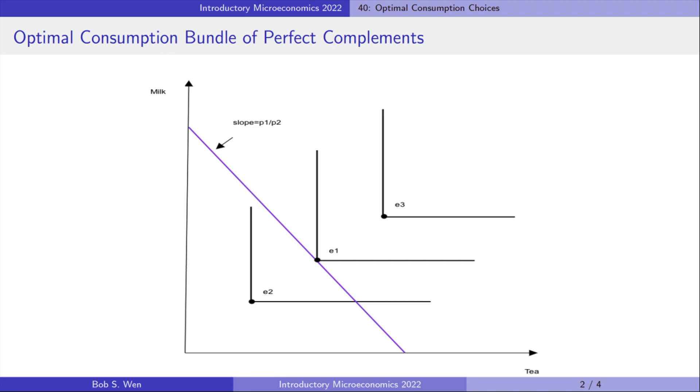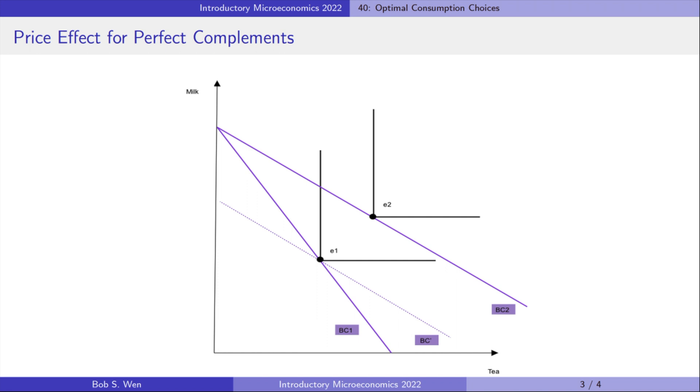Now suppose the price of tea drops while the price of milk and the consumer's income remain unchanged. The decrease in the tea's price rotates the budget line and it becomes flatter.